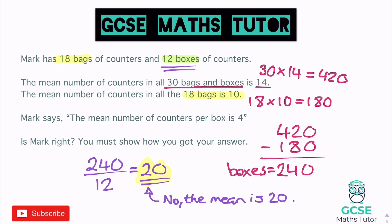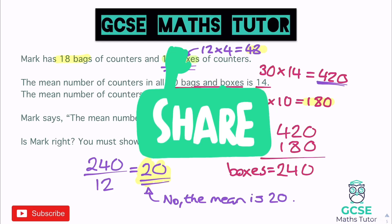Another way to check: if the mean per box were 4, then 12 times 4 equals 48. Adding 48 and 180 gives 228, which doesn't equal the total of 420, confirming Mark is wrong. That's how you do a reverse mean question - multiply rather than divide to work backwards. Hopefully that was helpful. If so, please like, comment, subscribe, and I'll see you for the next one.